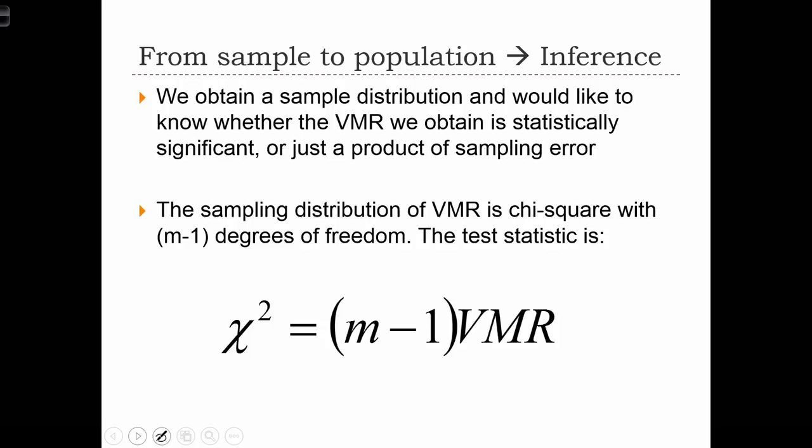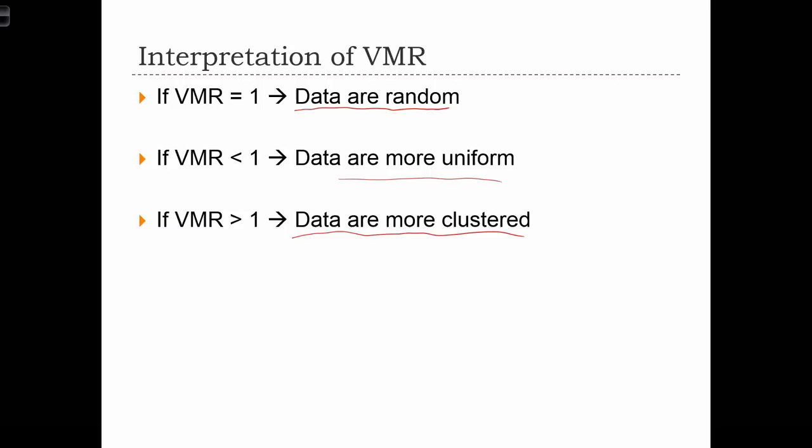Now, how do we take that VMR that we just calculated and determine if it's statistically significant? So basically, what we want to know is, is the VMR statistically different to 1? So we know that the VMR could be slightly different to 1, but maybe that slight differentiation is just caused by the sampling error.